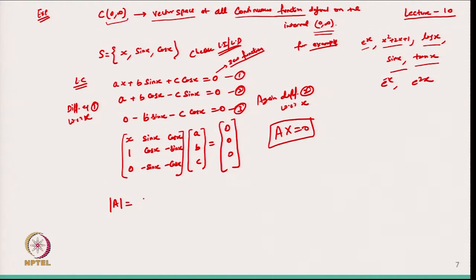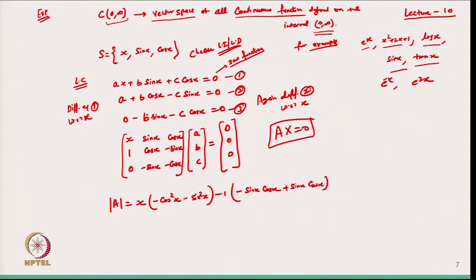Let us find the determinant. Expanding from the first column, we get: x·(−cos²x − sin²x) − ... After simplification, using sin²x + cos²x = 1, the determinant evaluates to −x.